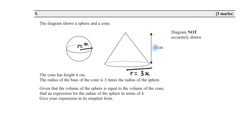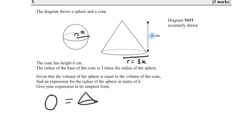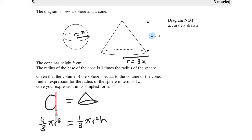The question states that the volume of the sphere equals the volume of the cone. Volume of sphere = (4/3)πr³; volume of cone = (1/3)πr²h. We write this as an equation: (4/3)πx³ = (1/3)π(3x)²h. We want to find an expression for the radius of the sphere in terms of h — meaning we want r = something.